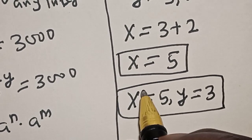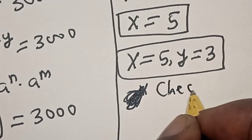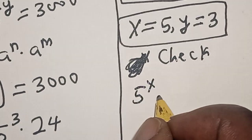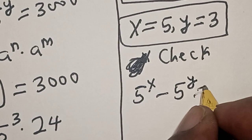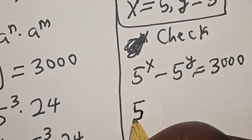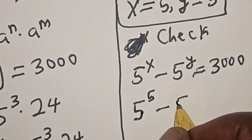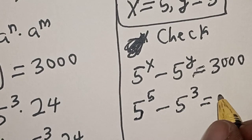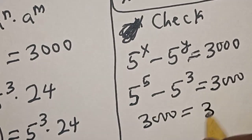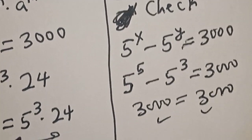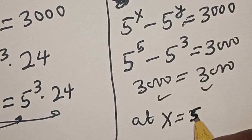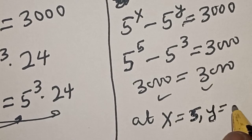We can check to confirm if this answer is correct. For us to check, we substitute into the given equation: 5 raised to power x minus 5 raised to power y equals 3,000. With x equal to 5, we have 5 raised to power 5 minus 5 raised to power 3, which equals 3,000. The left-hand side equals the right-hand side, so we satisfy the equation at x equals 5 and y equals 3.